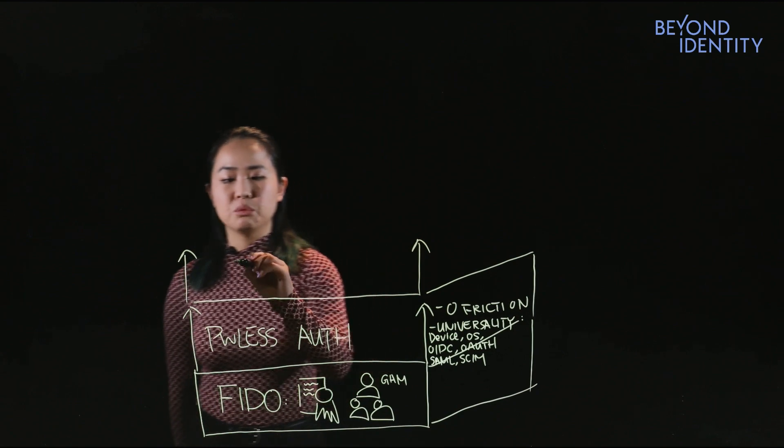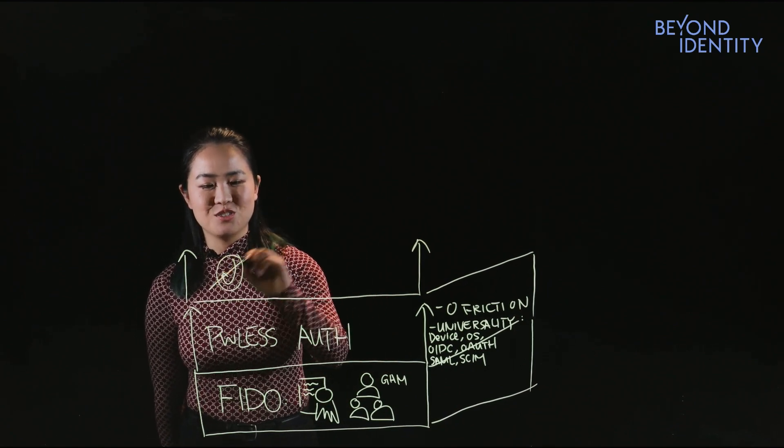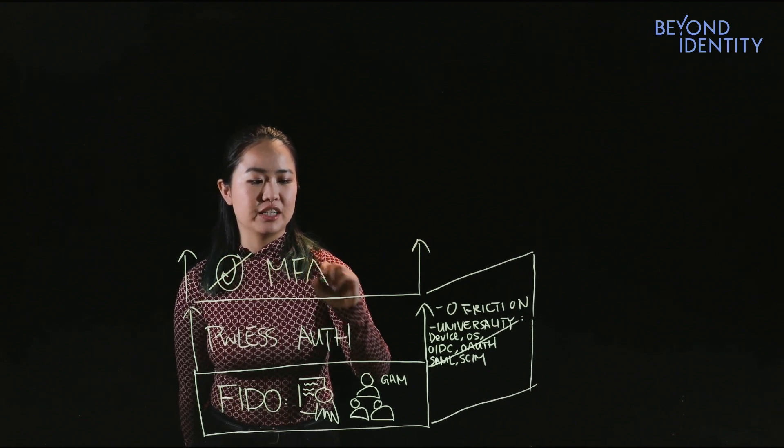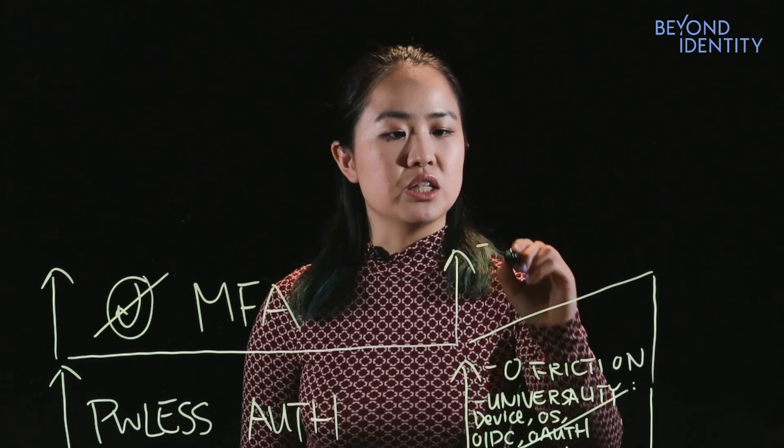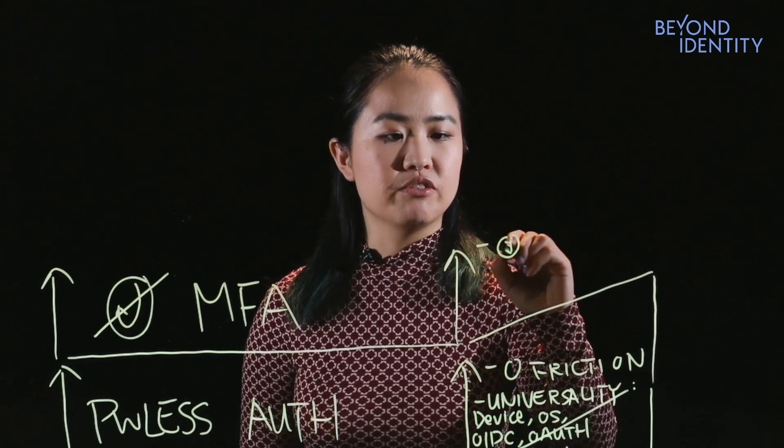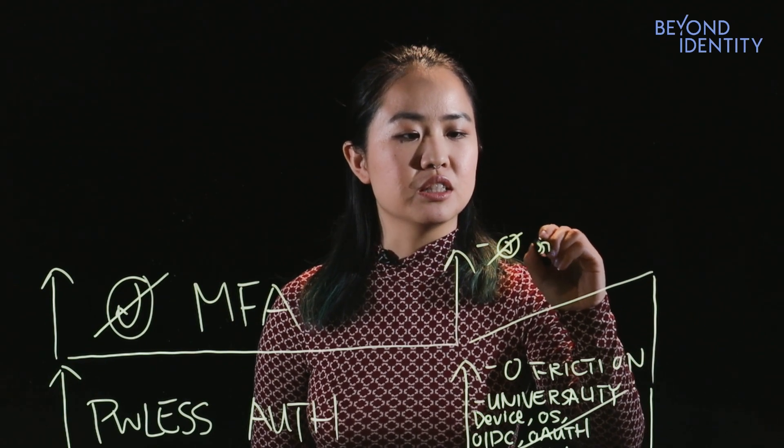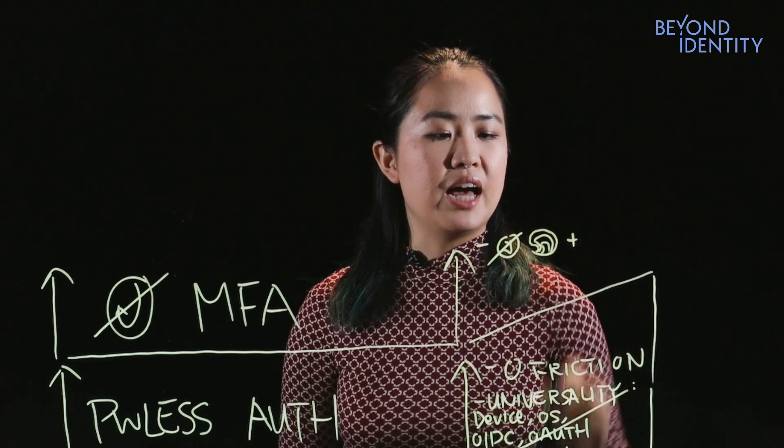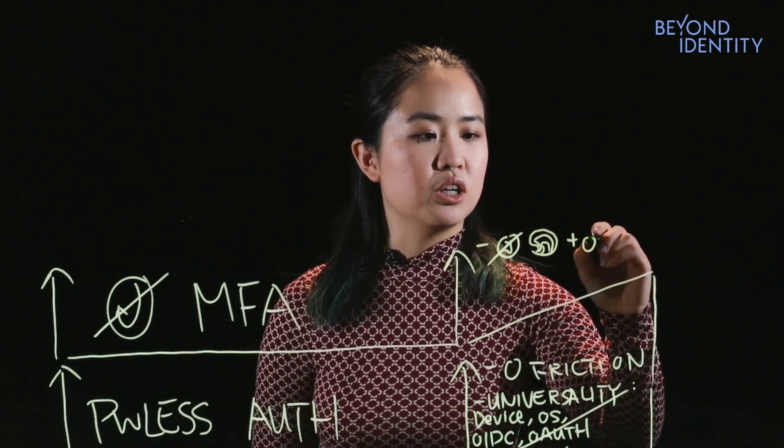With Beyond Identity, we offer phishing resistant, this is a fish hook, so there's no phishing allowed. We offer phishing resistant multi-factor authentication. And what we mean by that is there is no phishable factors. In fact, we only use local device biometrics. This is my poor attempt at a fingerprint, as well as a passkey, which is a public private key pair. So I'll draw a little key here.